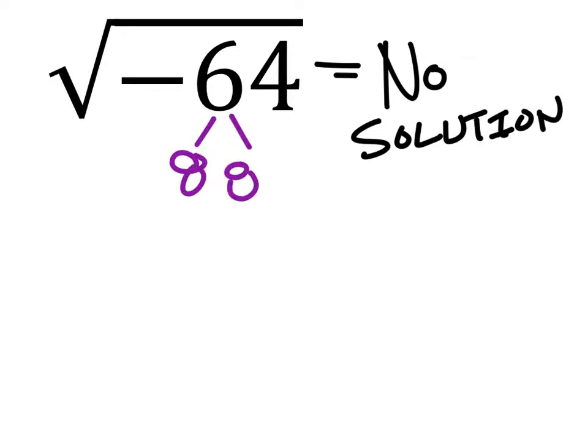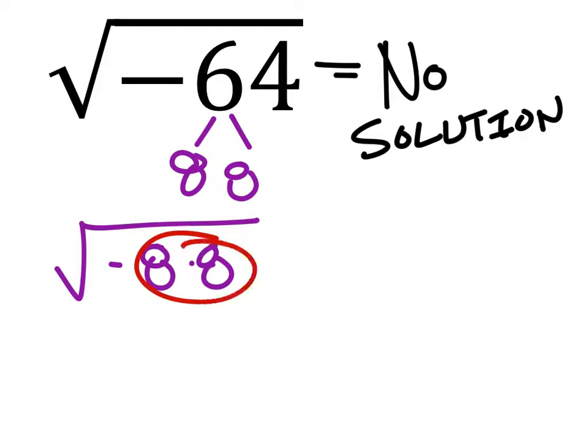64 is 8 and 8. So we have the square root of negative 8 times 8. There's a pair of numbers right now. And we've got 8 times the square root now of negative 1.